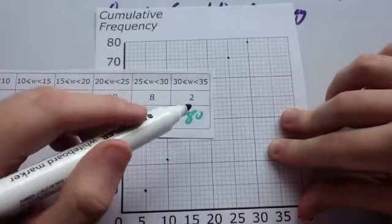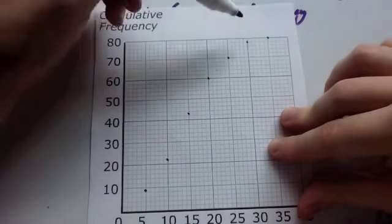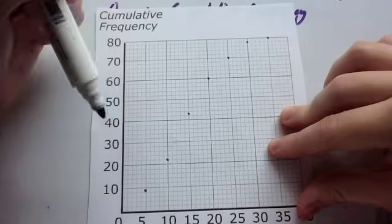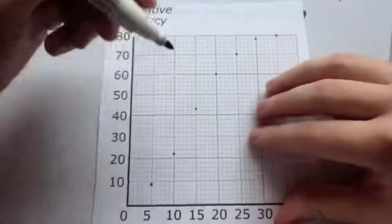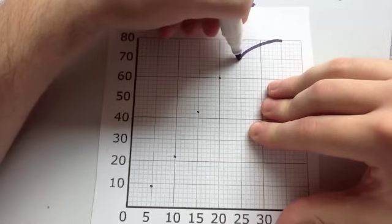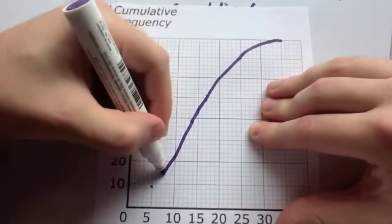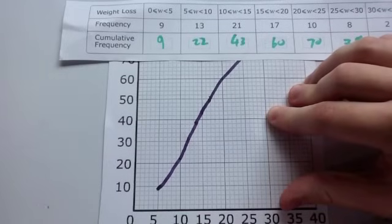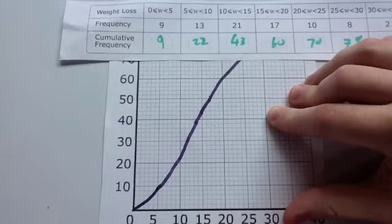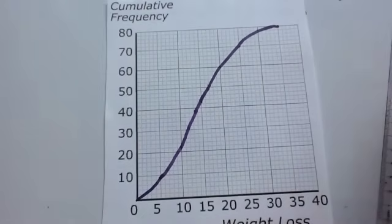The next one is 25 to 30 and it's 78. So we're going to go 30 across and 78 up. And finally, 30 to 35 goes up to 80. So 35 goes up to 80. You'll see now that your points follow the cumulative frequency curve shape. So what you do is you draw a nice smooth curve through these. Drawing a nice smooth curve through each of the points. If you want to do this one, because it starts off at zero, you could connect the zero up to there if you wished. In the exam, they wouldn't penalize you for that. And there we've drawn our cumulative frequency curve.